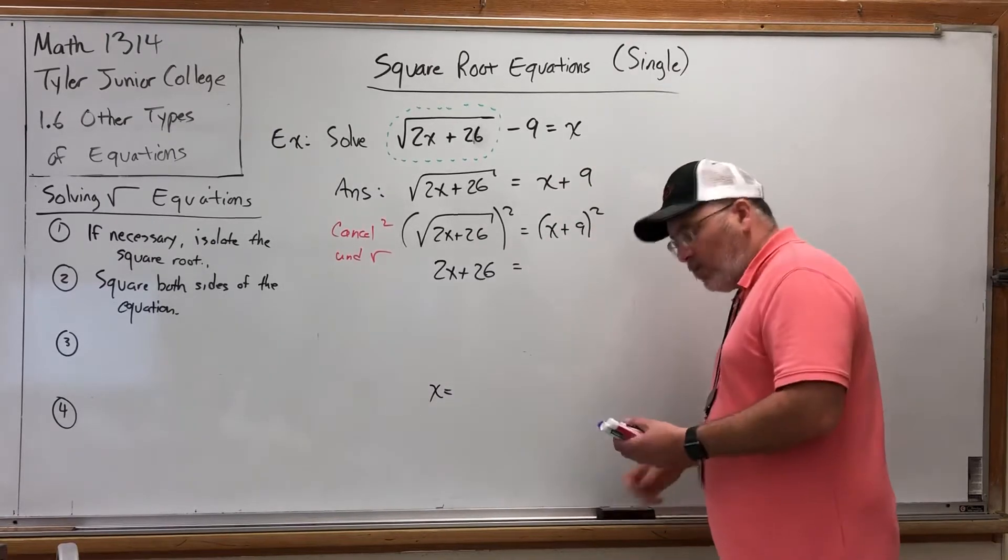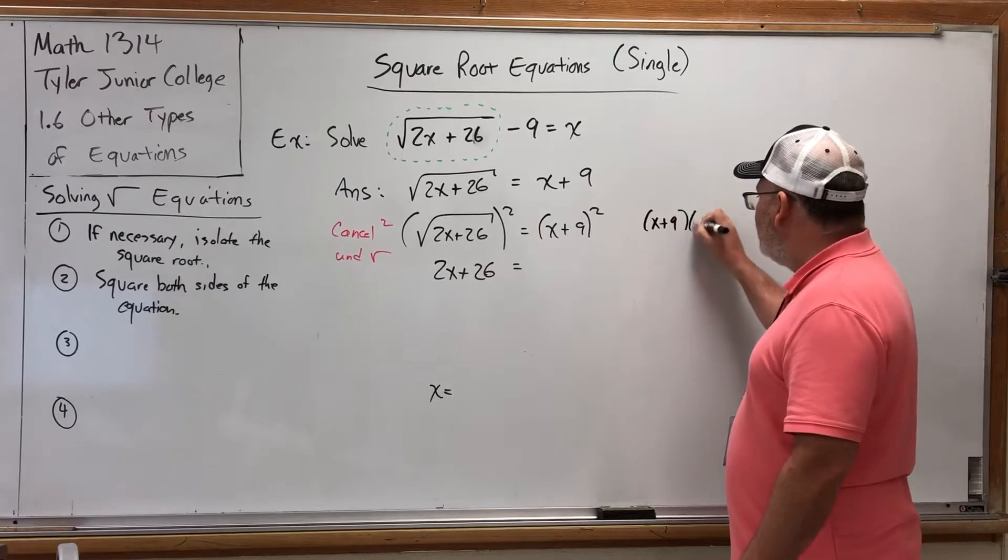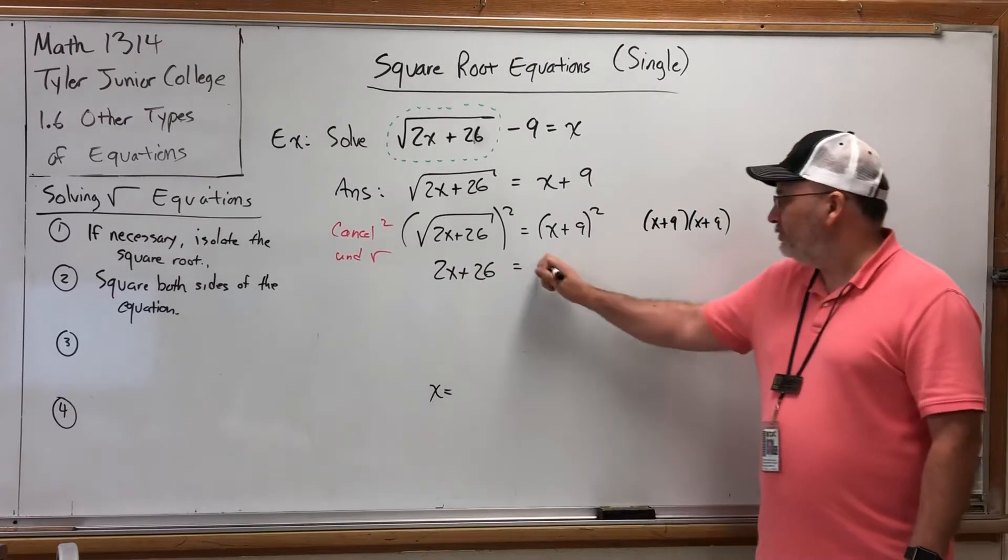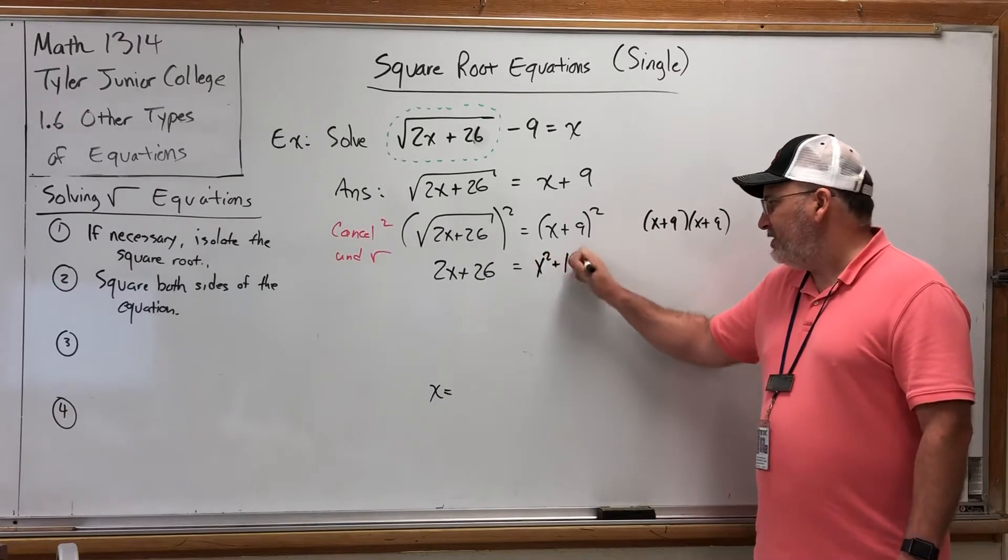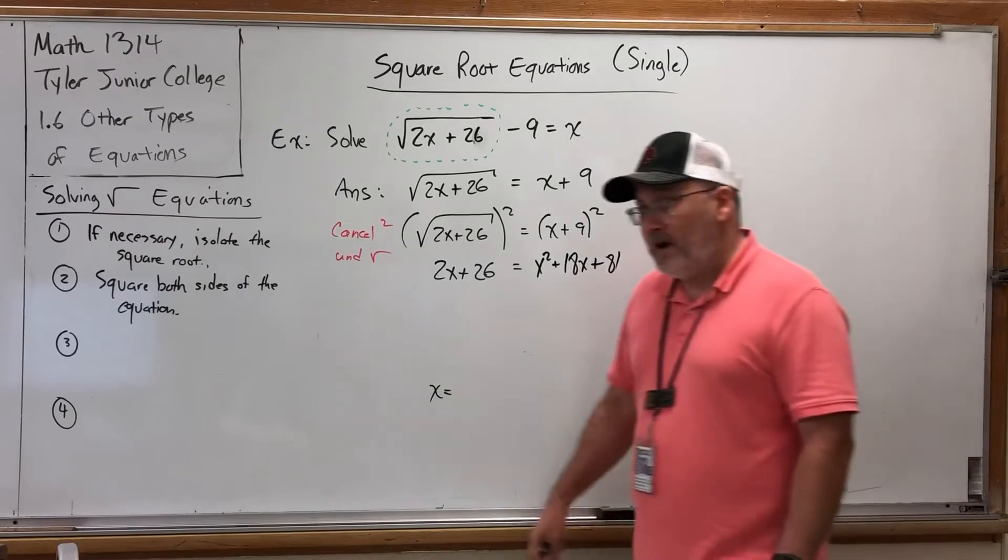So how do you square x plus 9? Answer, you write it twice and foil it. x plus 9 times x plus 9. I'll spare you the details. x squared plus 18x plus 81 is what we'll get when we foil with combined like terms.